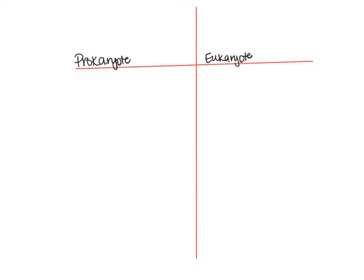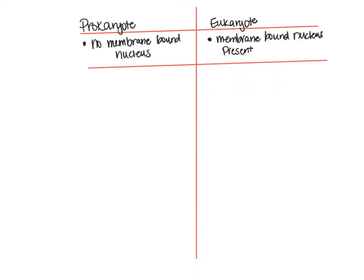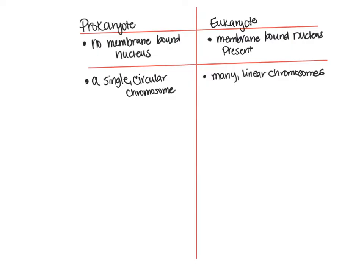I'm going to use this t-chart to compare prokaryotic cells to eukaryotic cells based on certain conditions and characteristics. First is the presence of a membrane-bound nucleus: prokaryotes do not have a membrane-bound nucleus, while eukaryotes do. Next, we're going to compare the DNA: prokaryotes have a single circular-shaped chromosome, whereas eukaryotes will have many linear chromosomes. Next, we're going to compare size: prokaryotic cells are very small, whereas eukaryotic cells are large.